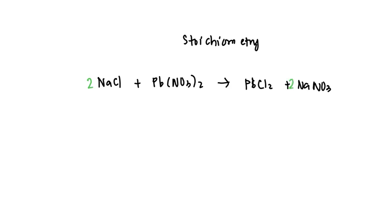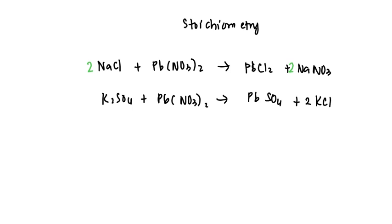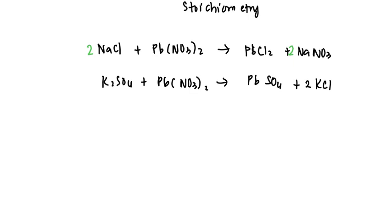Meanwhile, the potassium sulfate will react with the same lead nitrate to form the precipitate lead sulfate along with soluble KCl according to this balanced chemical equation.